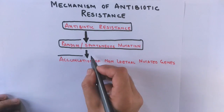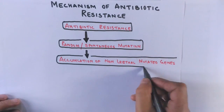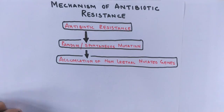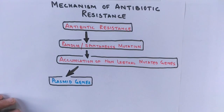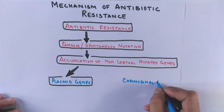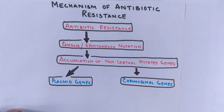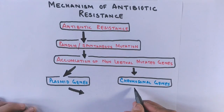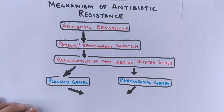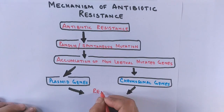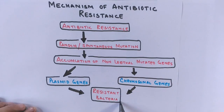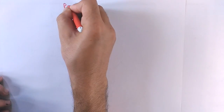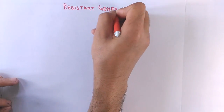When we talk about antibiotic resistance, we see there is an accumulation of non-lethal mutated genes in bacteria, passed into the next generation over a course of time. The genes which make bacteria resistant can be plasmid genes or chromosomal genes depending upon the mutation, but mostly resistant genes are found on plasmids. In this way we eventually have a resistant bacteria.